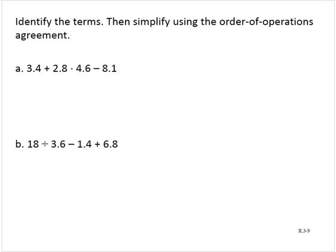Identify the terms, then simplify using the order of operations agreement. So in the first exercise, I have 3.4, I have 2.8 times 4.6, and I have 8.1.